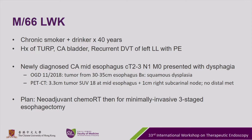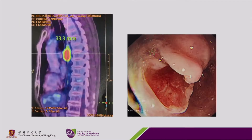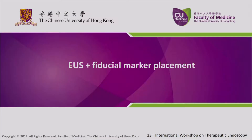Our plan for this patient is for neoadjuvant chemo-RT, then minimally invasive three-stage esophagectomy. This is the PET CT and also the endoscopic view of this patient's tumor. Today we'll be doing EUS for fiducial marker placement.